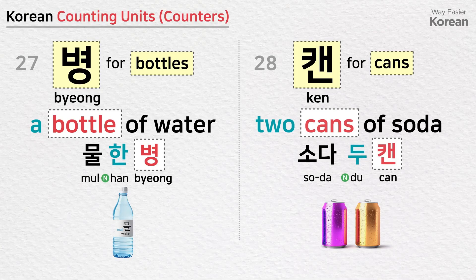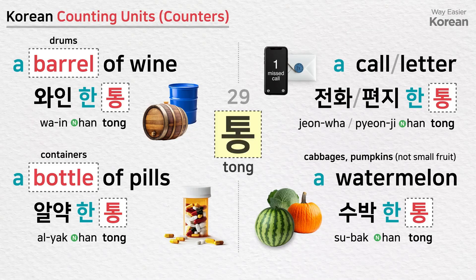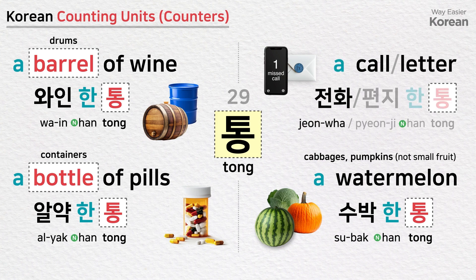병 is used to count bottles: a bottle of water — 물 한 병. 캔 is a counting unit for cans: two cans of soda — 소다 두 캔. 통 is a counting unit for barrels, drums, calls, letters, bottles of pills, containers, watermelons, cabbages, and pumpkins: a barrel of wine — 와인 한 통; a bottle of pills — 알약 한 통; a call — 전화 한 통; a letter — 편지 한 통; a watermelon — 수박 한 통.